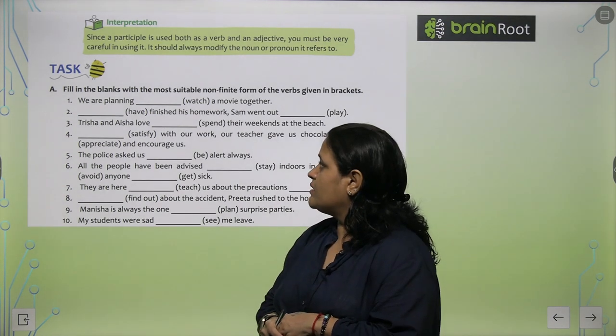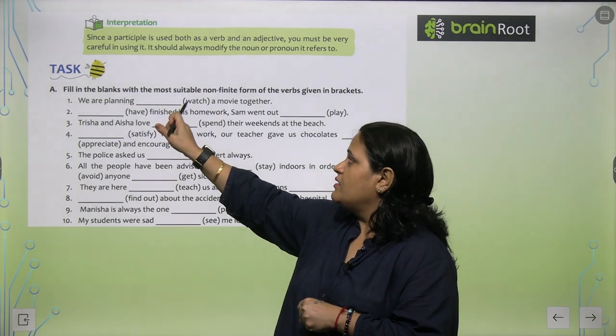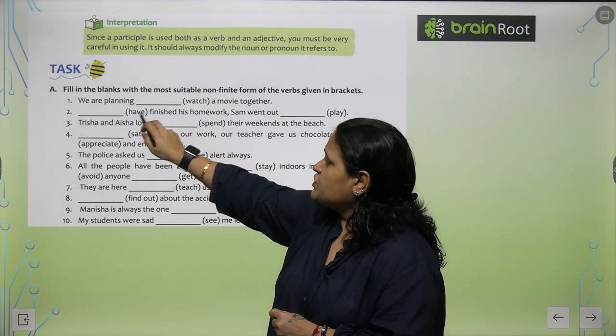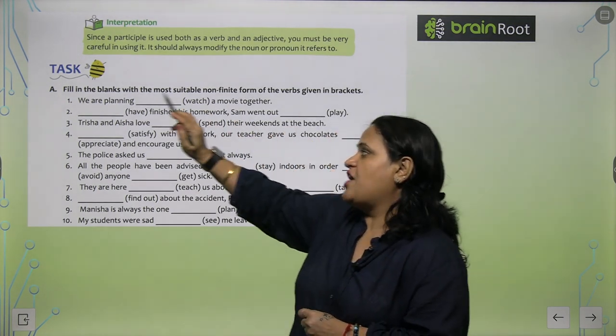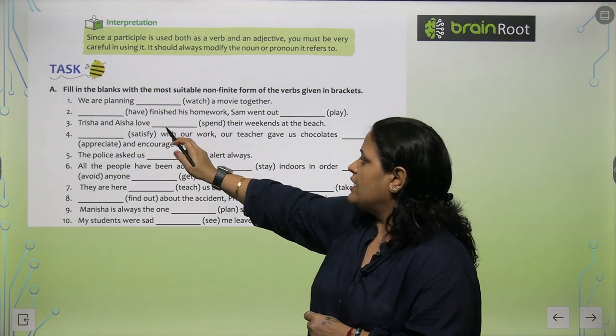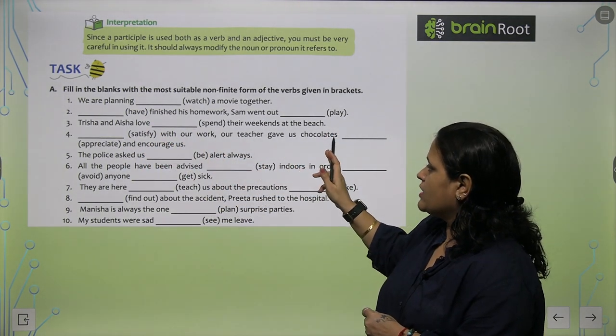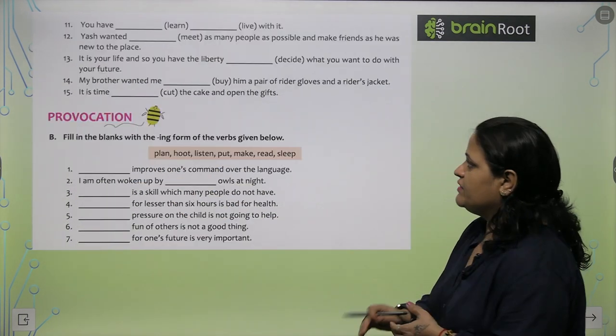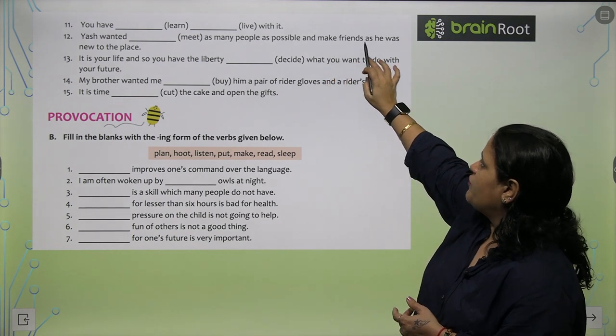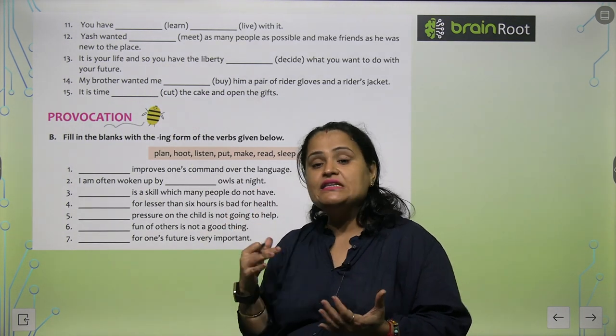Now fill in the blanks with the most suitable non-finite verb form of the verbs given in brackets. We were planning to watch a movie together. Having finished his homework, Sam went out to play. Trisha and Aisha love to spend their week at the beach. Satisfied with our work, our teacher gave us chocolate to appreciate and encourage. The rest I am leaving for you. Please do it in your homework.